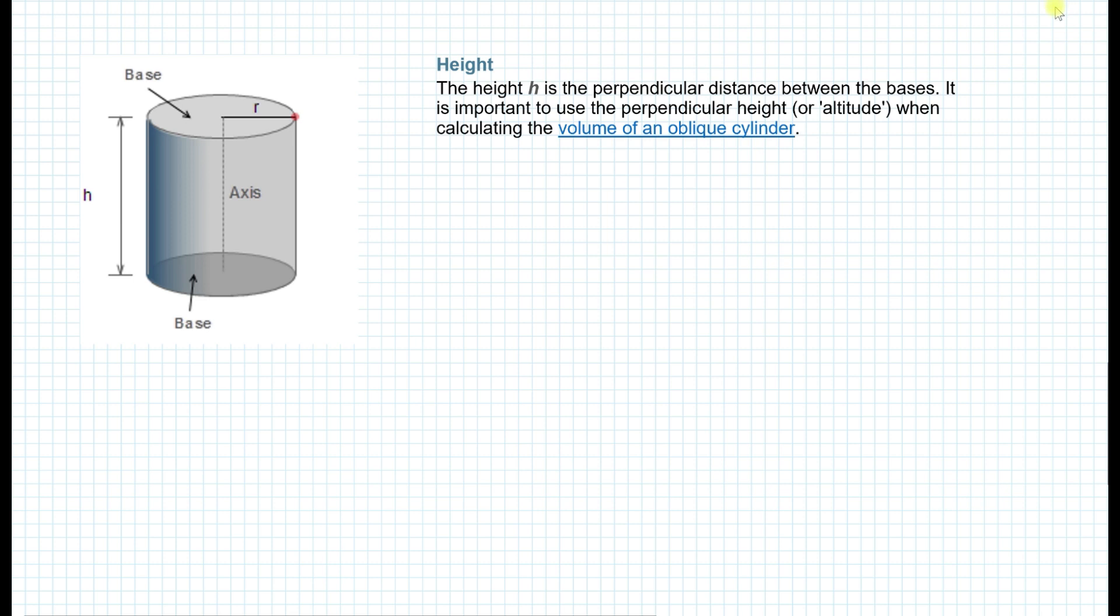Let's discuss some nomenclature pertaining to cylinders. The height, as you can see from the figure, is the perpendicular distance between the bases. It is important to use the perpendicular height or altitude when calculating the volume of an oblique cylinder. So basically, for an oblique cylinder, the height is always perpendicular to the base. It's very similar to when you have a triangle that is obtuse, for example. The height from this point is always perpendicular to the base.